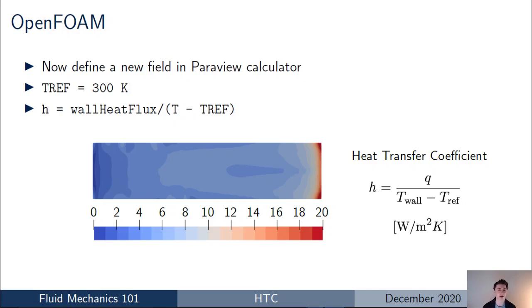Now for the scenarios I've shown so far, they all assume the reference temperature is constant — and that's going to be the case for external aerodynamics flow, where the reference temperature for all cells is the same value. Likewise, for a constant pipe flow in internal flow, the reference temperature is going to be constant all the way along the pipe and equal to the mass flow average temperature.